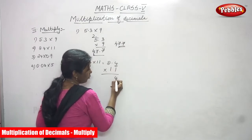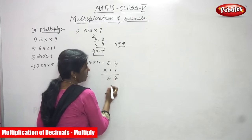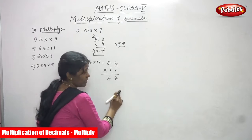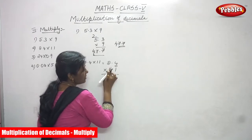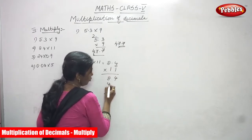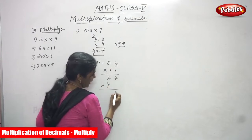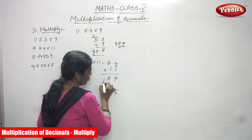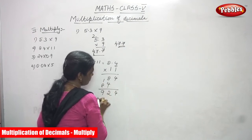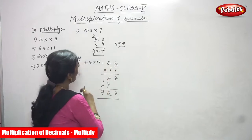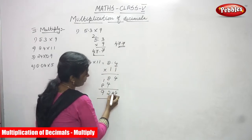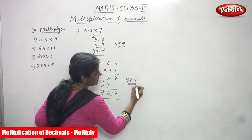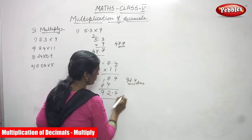1 times 4 is 4 and 1 times 8 is 8. Leave the ones place, then for the tens place: 1 times 4 is 4 and 1 times 8 is 8. Now adding: 8 plus 4 is 12, write 2 carry 1, then 8 plus 1 is 9. There is only one digit after the decimal, so move the point one place from the right. The answer is 92.4.